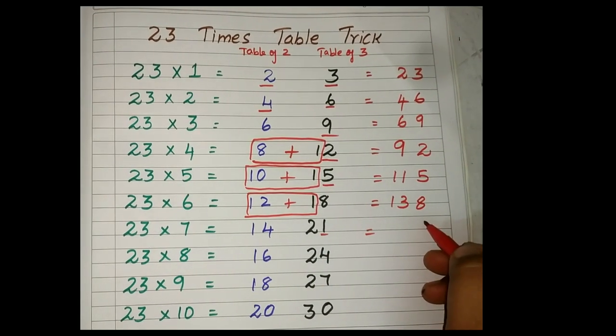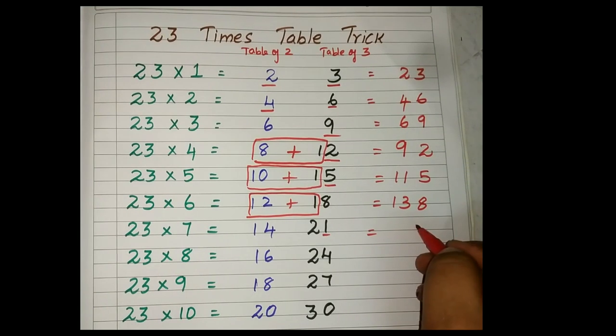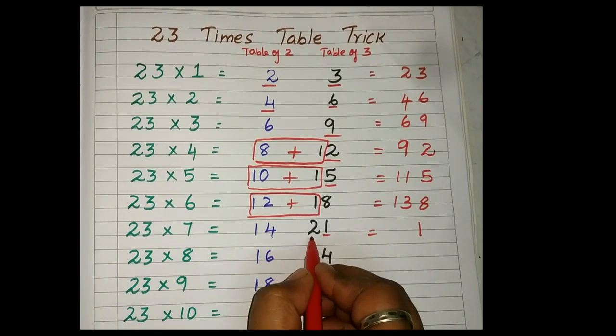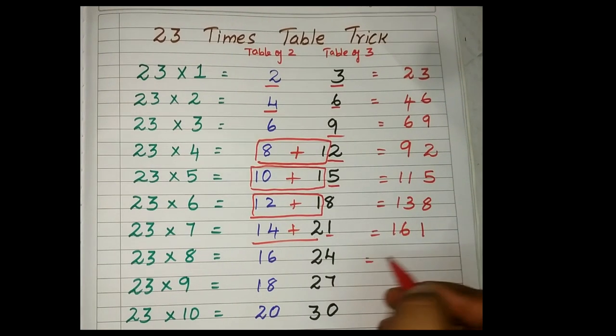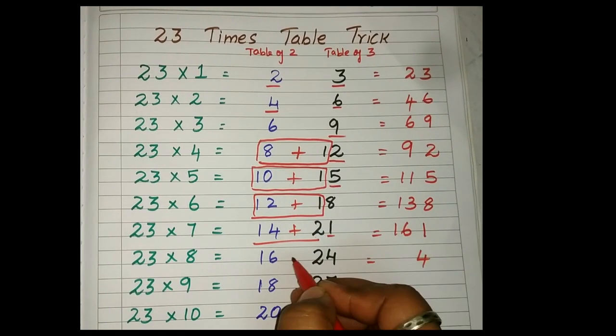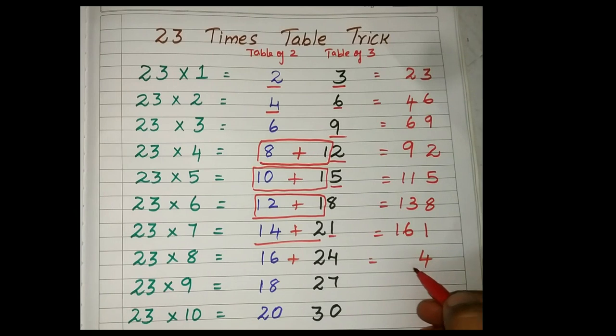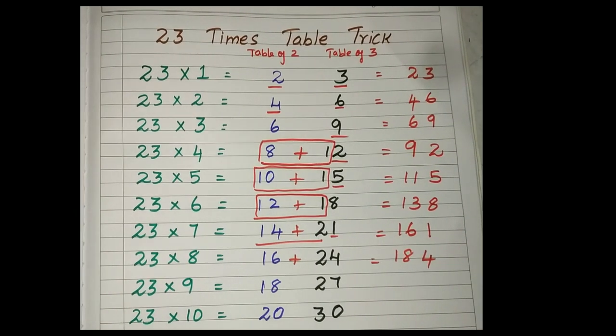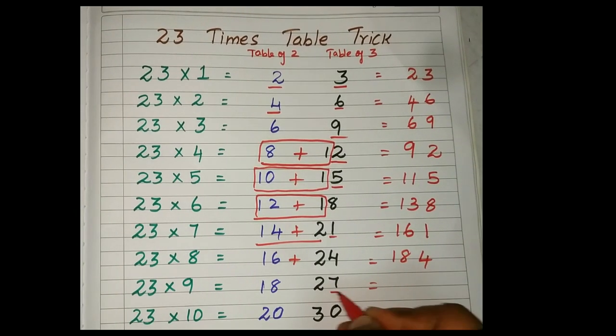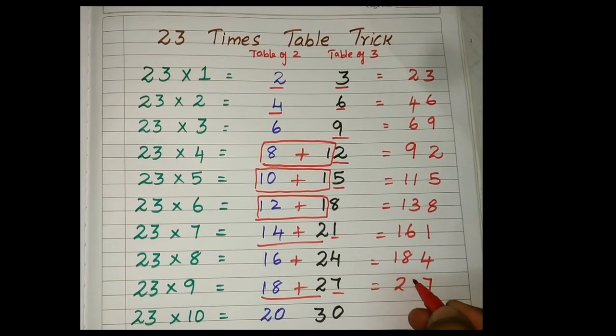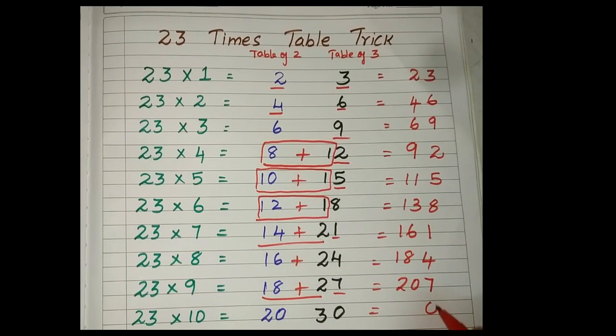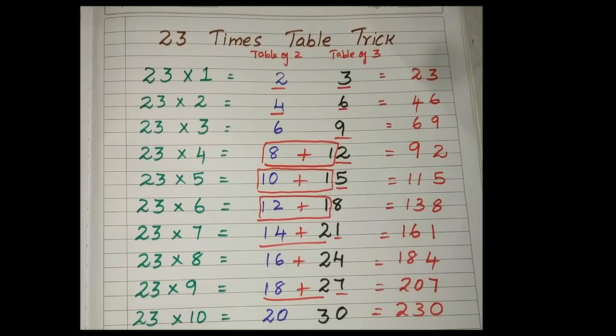How, ma'am, how to do it? Yes, let me complete this and I will tell you. 1, then 14 plus 2, it is 16. Then 4 in the ones place. 16 plus 2, it is 18. 184. Then 7 in the ones place. 18 plus 2, it is 20. 207. 23 tens are 230. Am I clear, children?